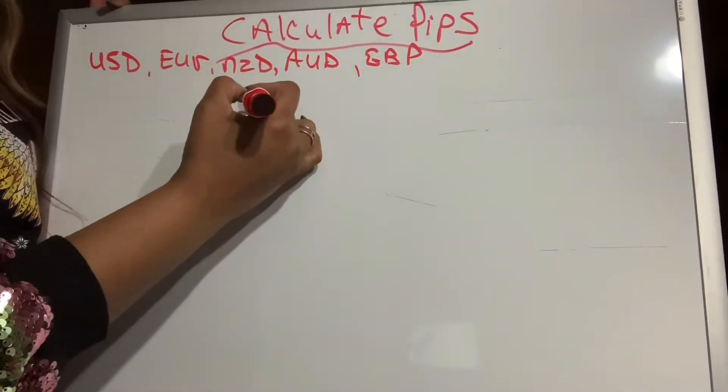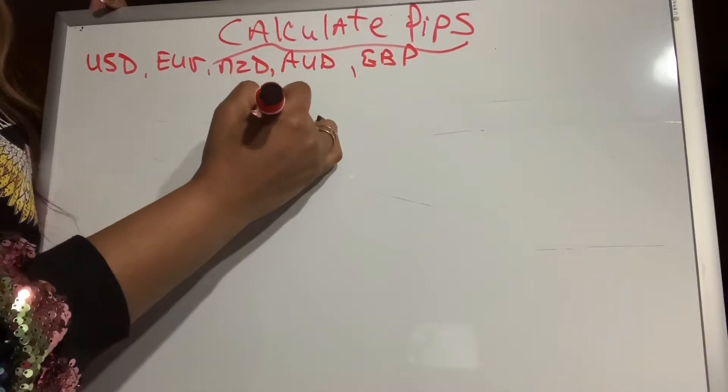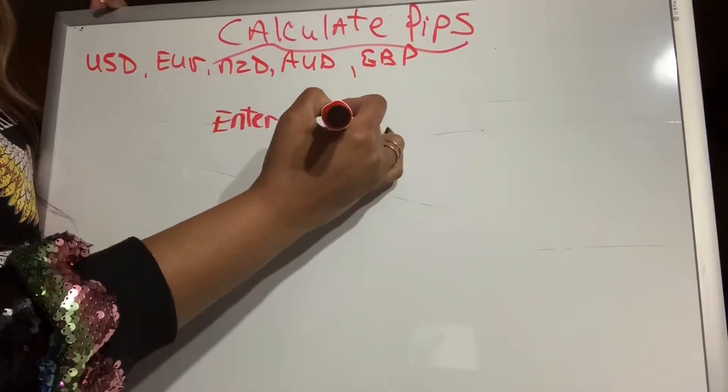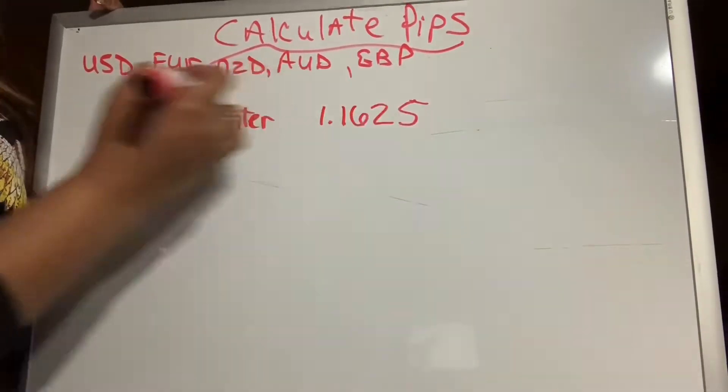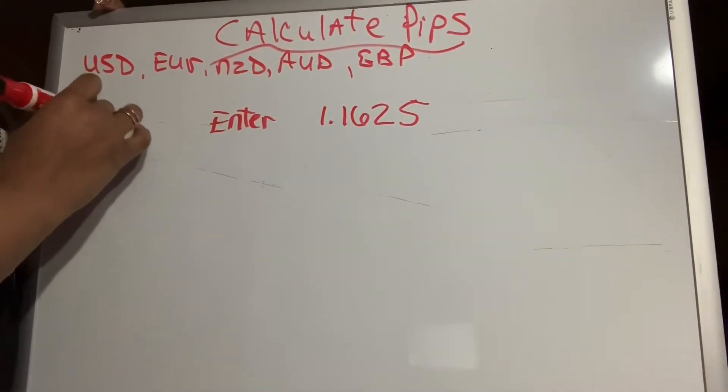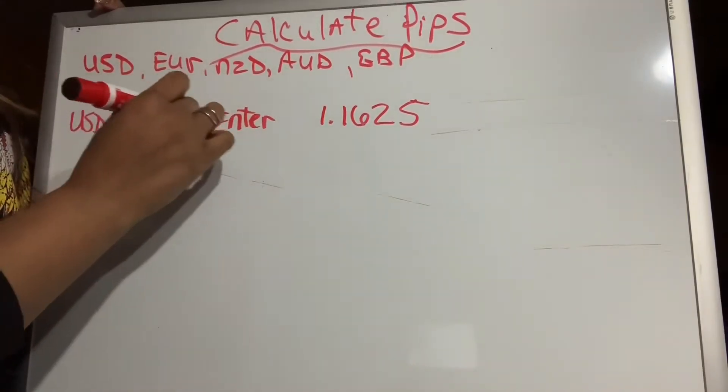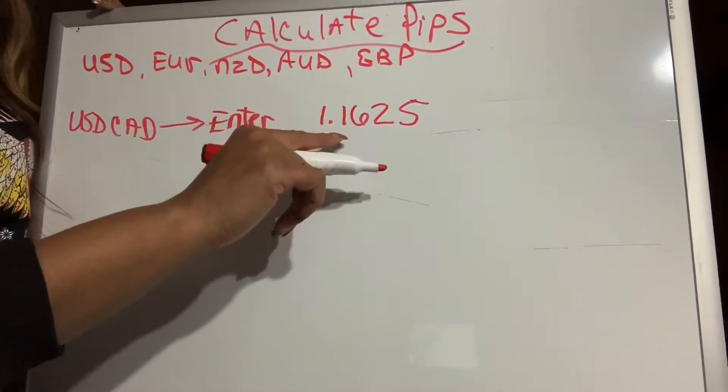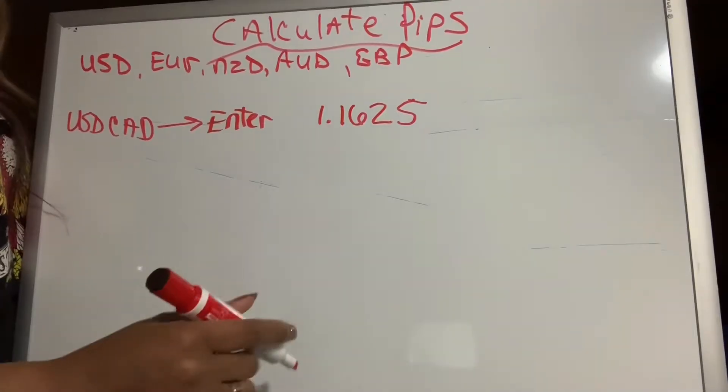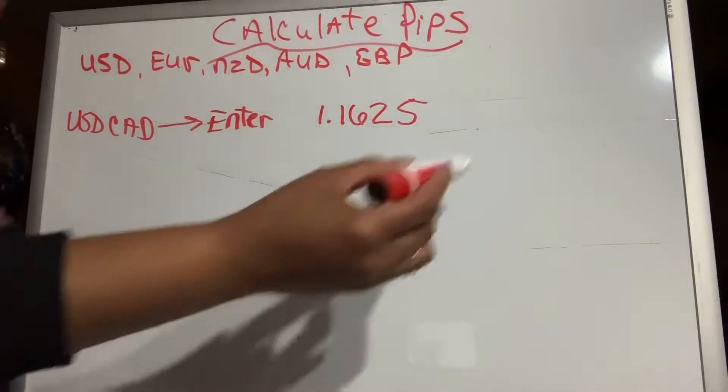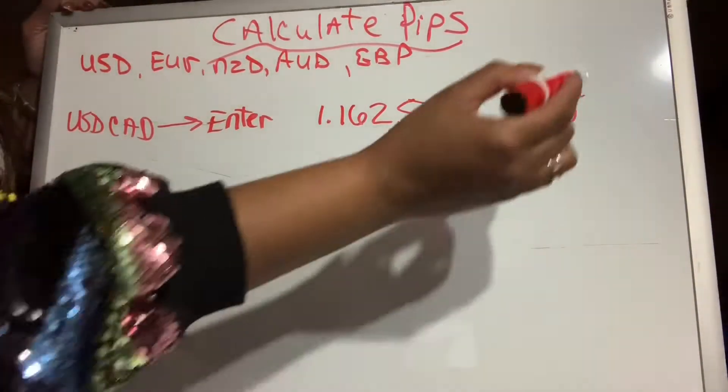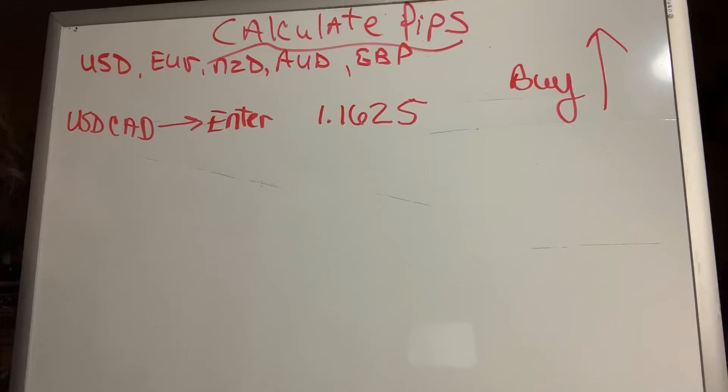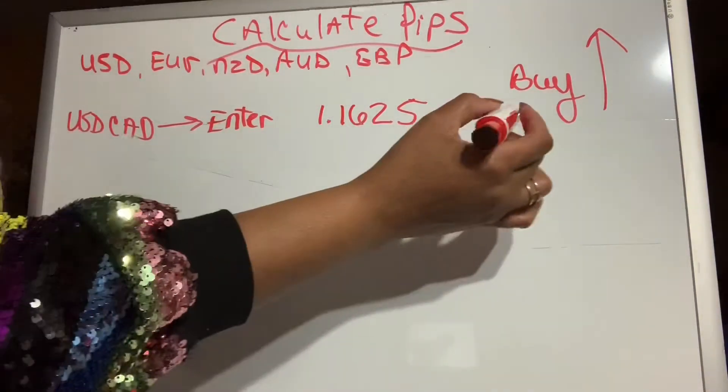Say you enter the market at 1.1625. We're trading USDCAD. You enter the market at 1.1625, and you are on a buy. You want to buy. So when we're in a buy, we want the market to go up. If you want to catch 10 PIPs, where do you add the 10 to?